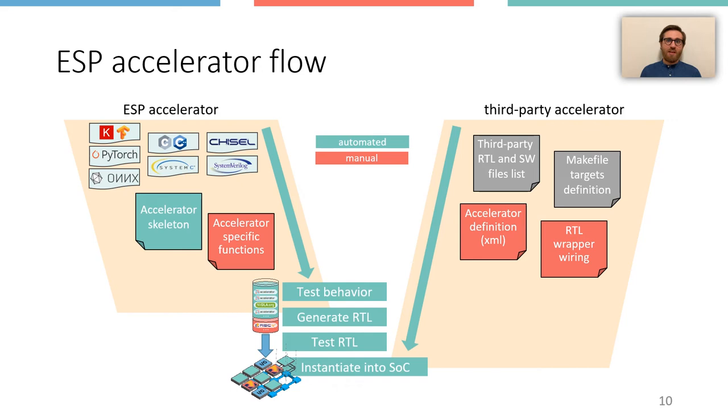After these simple steps, ESP sees the third-party accelerator just like any other ESP accelerator. The accelerator can then be selected from the ESP GUI and nothing changes in the SoC design flow all the way down to FPGA prototyping.